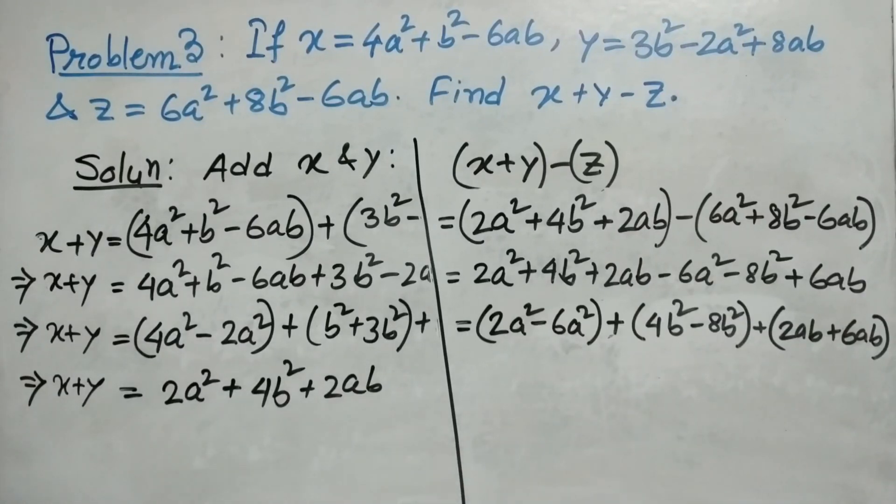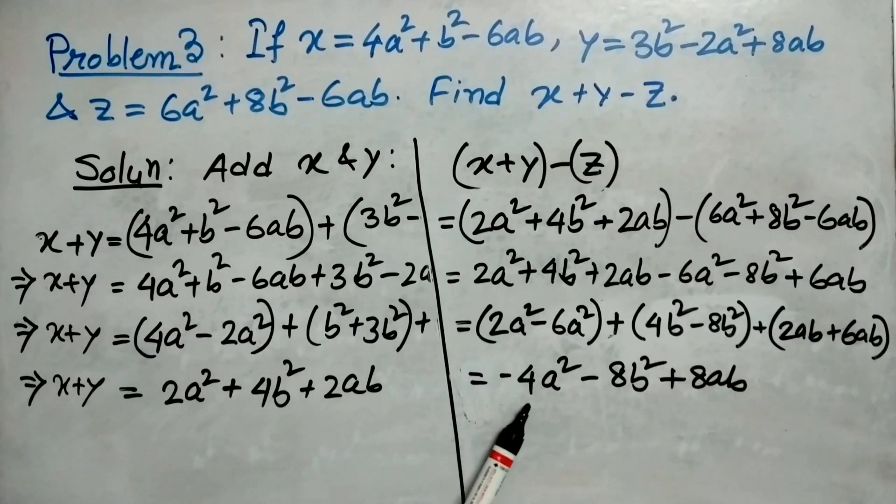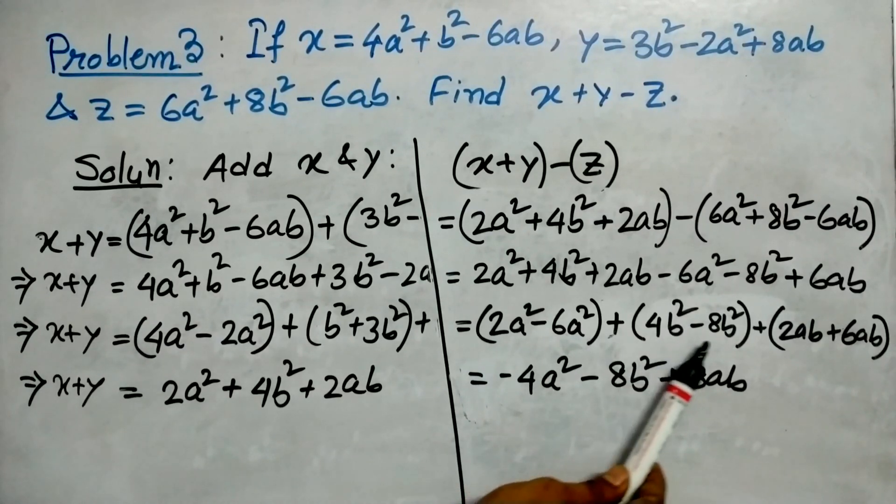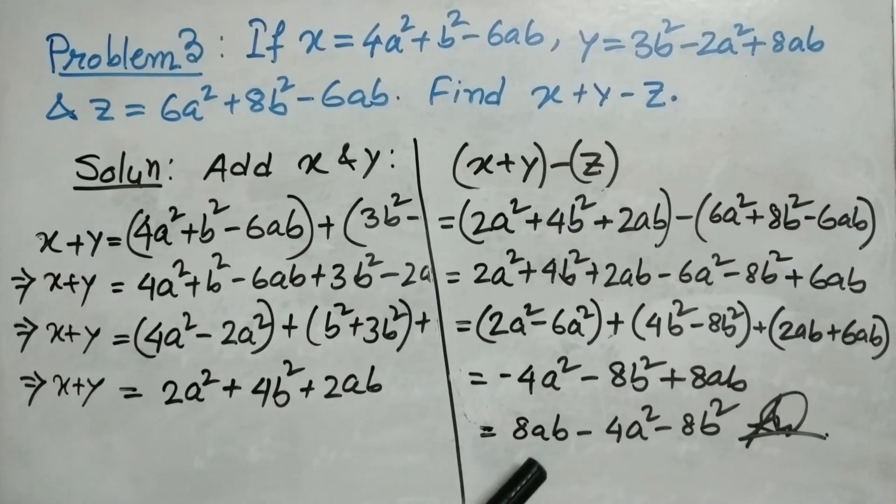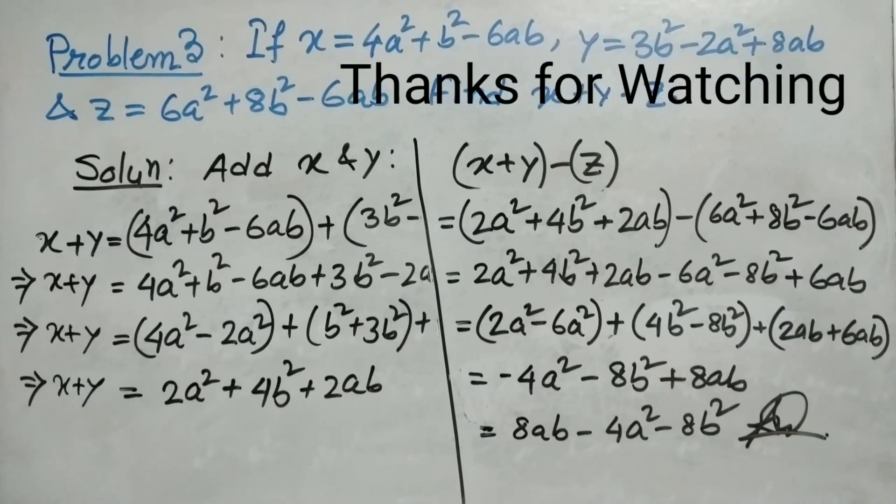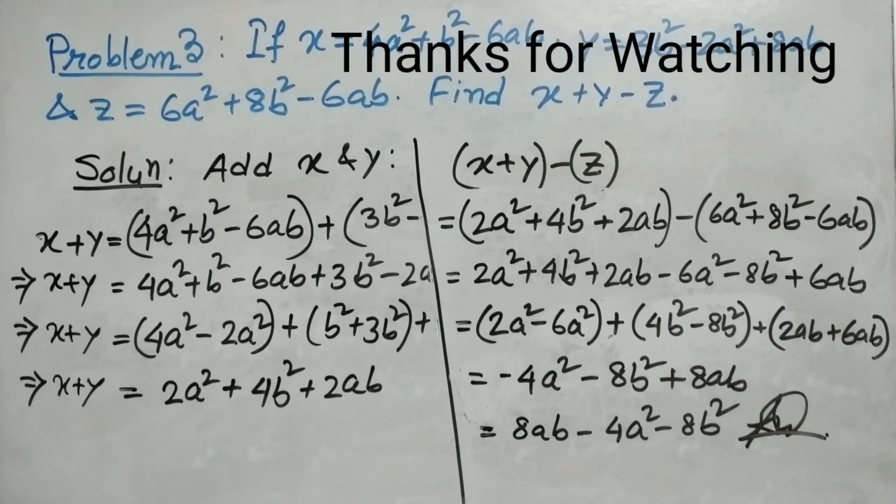We have segregated the like terms and put them in separate brackets. 2a²-6a² is -4a², 4b²-8b² is -4b², 2ab+6ab equals 8ab. Write it this way: 8ab-4a²-8b². That is the answer. Thank you for watching this video.